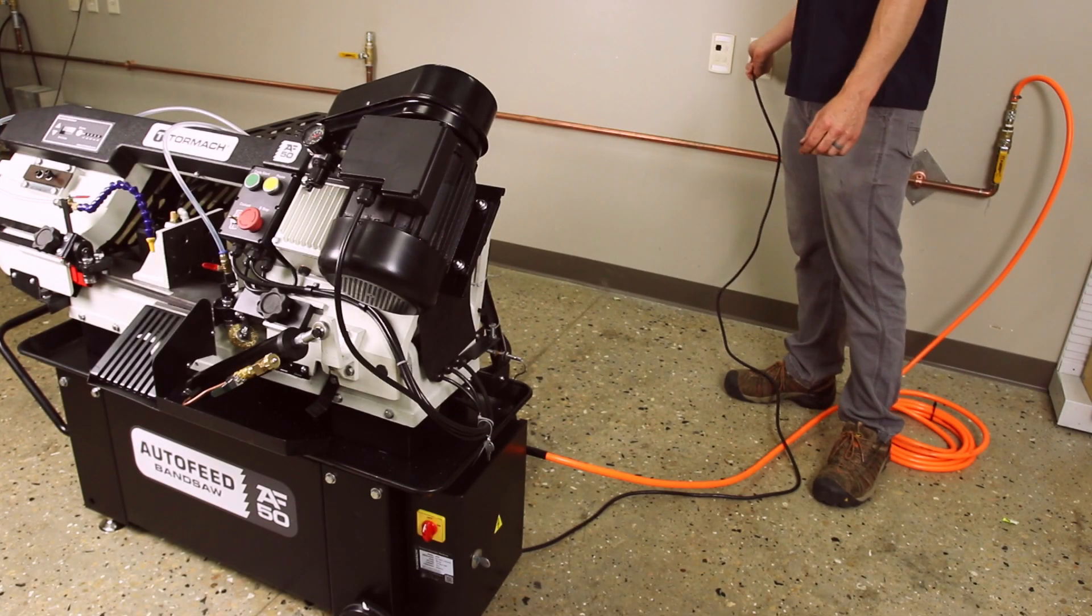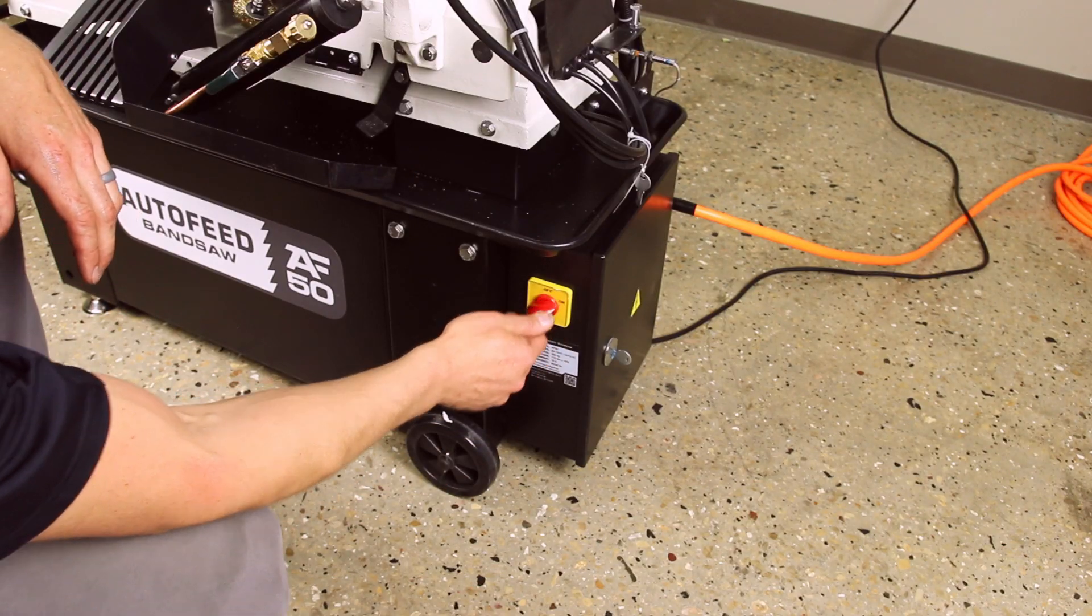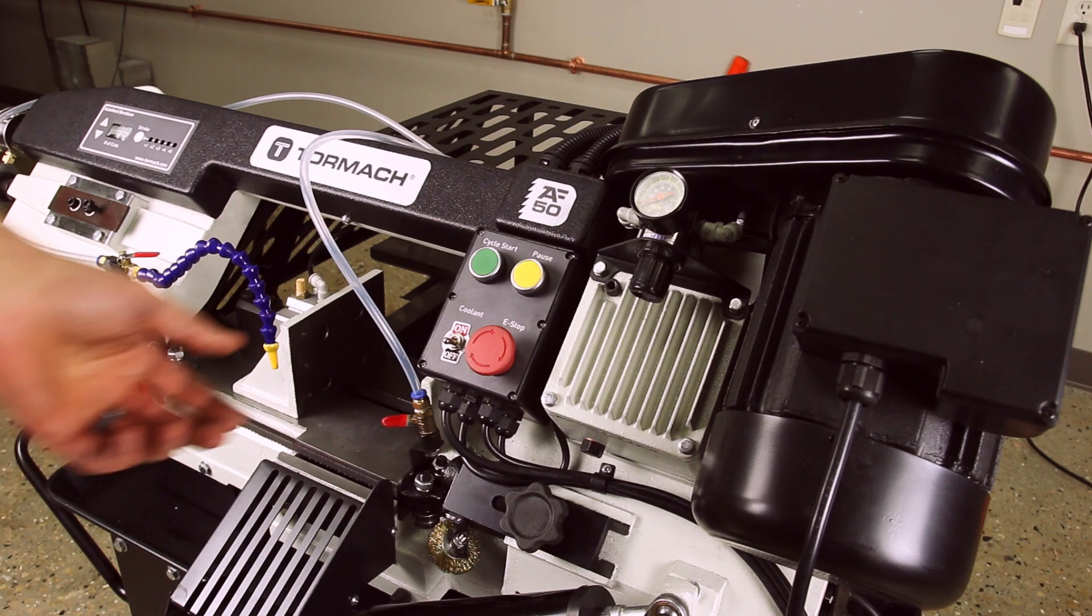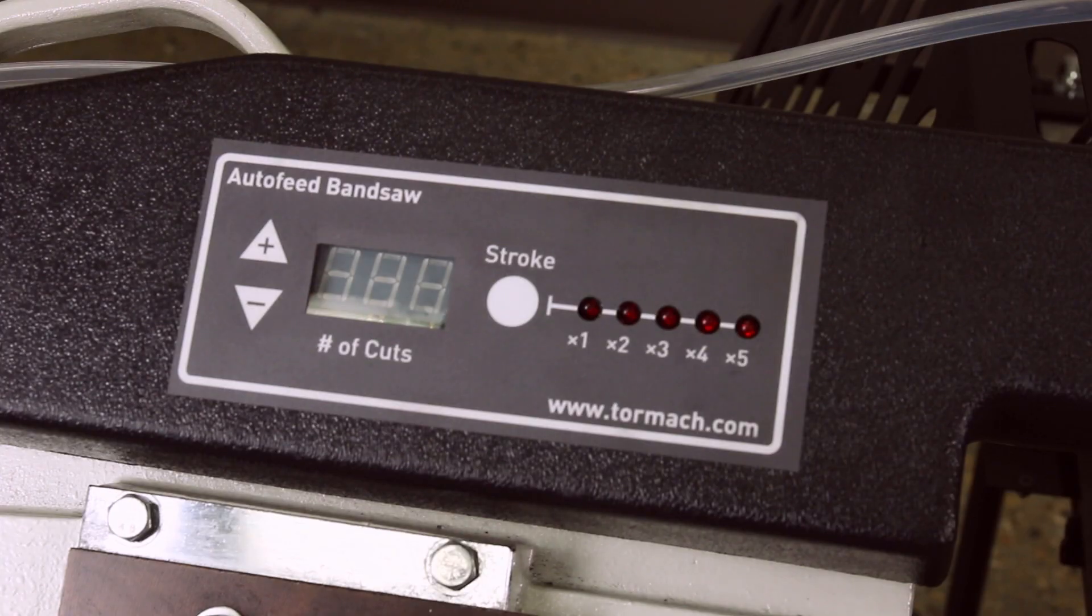Connect the bandsaw's power cable to a verified electric service. Turn the main disconnect switch to on. Rotate the emergency stop button one corner turn clockwise to release it. Verify that the lights on the control board panel come on.